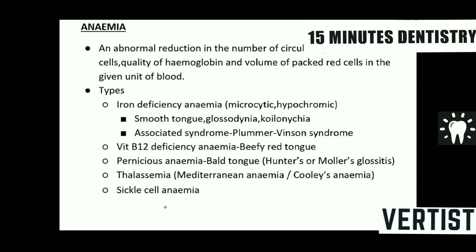Iron deficiency anemia can be diagnosed clinically. Patients may present with a pale, smooth tongue due to loss of papillae, and may complain of glossodynia. On examining fingernails, spoon-shaped nails — called koilonychia — may be seen. Most importantly, severe iron deficiency anemia is associated with Plummer-Vinson syndrome, which is a potentially malignant disorder. You must know everything about Plummer-Vinson syndrome and recognize it as a manifestation of severe iron deficiency anemia.